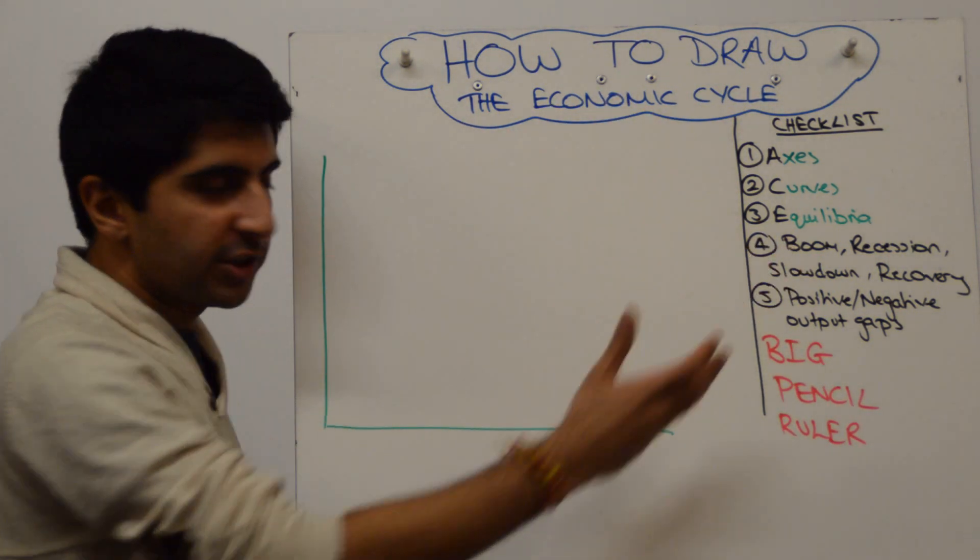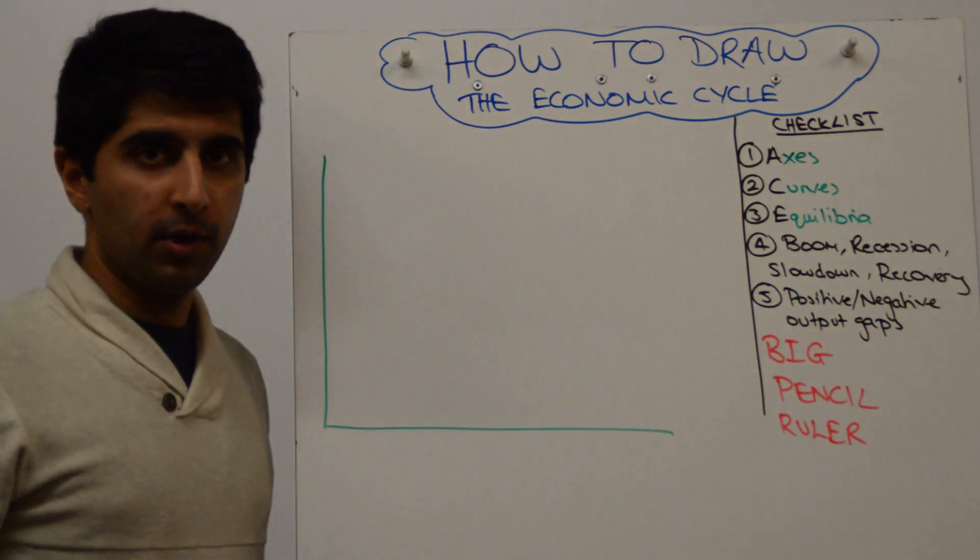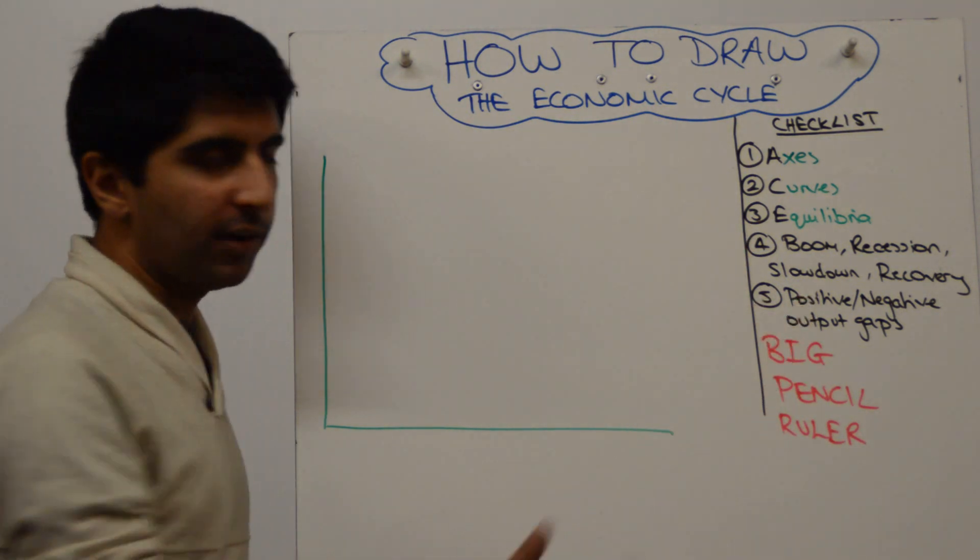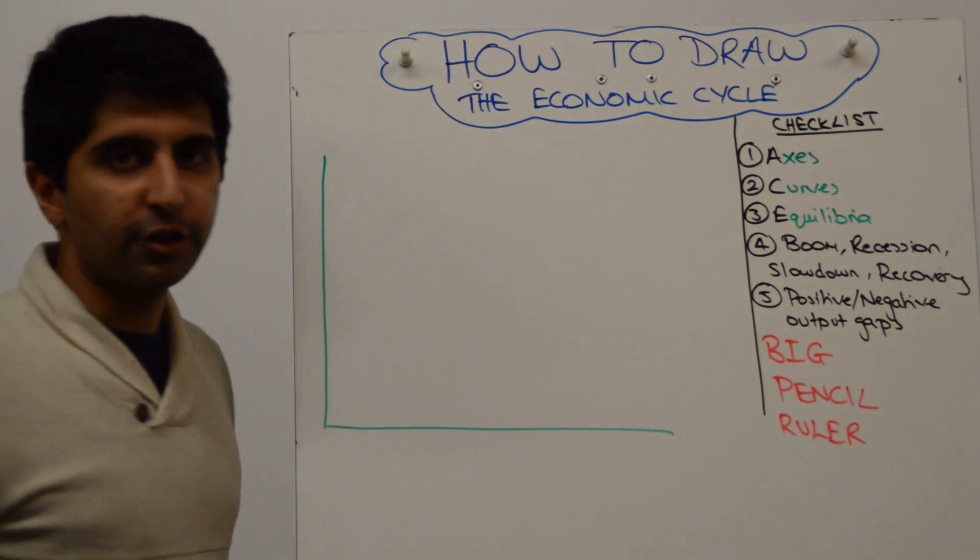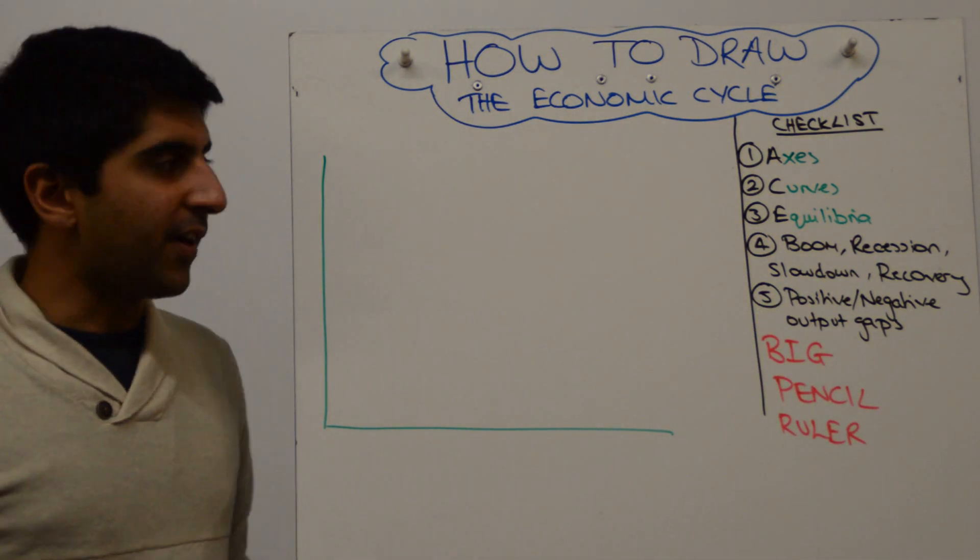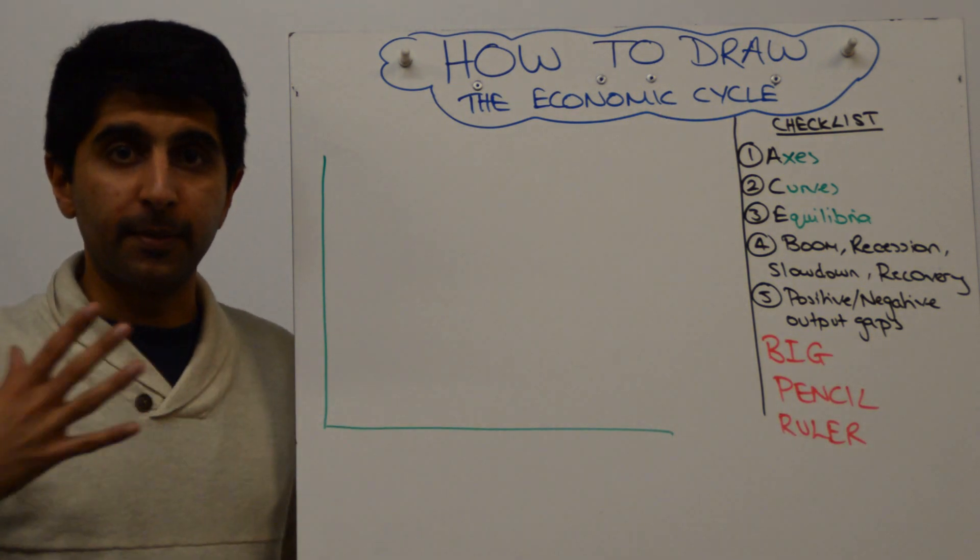Let's go straight to our checklist. What are the key things that we want to include here? We want to be including our boom, recession, slowdown and recovery, the four key stages of the economic cycle. And we also want to show positive and negative output gaps on this diagram. Bear in mind this is also known as the business cycle.